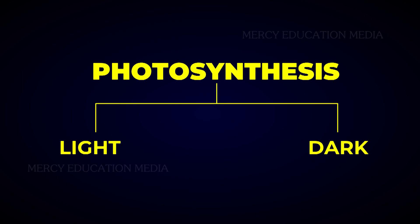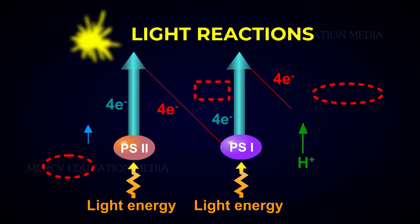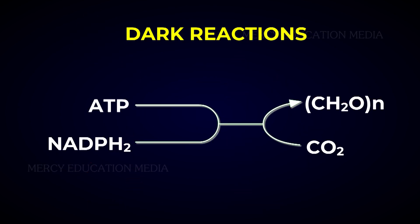The reactions of photosynthesis can be grouped into two: light reactions and dark reactions. The reactions involving the pigments, solar energy, and water that produce ATP and NADPH2 are called light reactions.